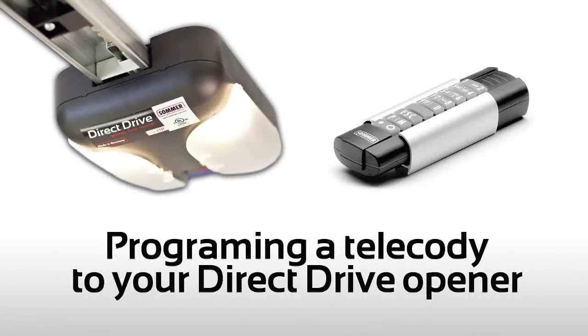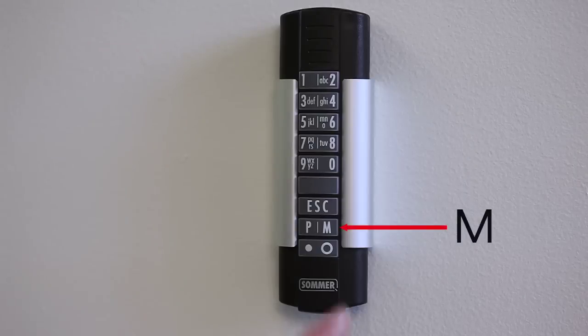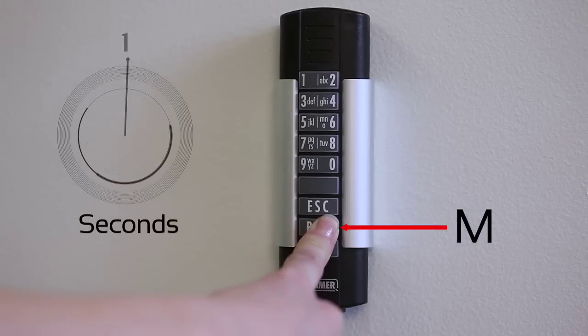Programming a Telecody to your SOMER Opener. To activate the Telecody, please press and hold the M button until the red LED lights up.